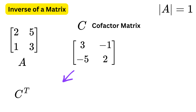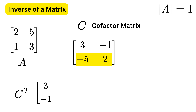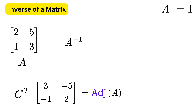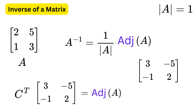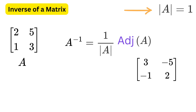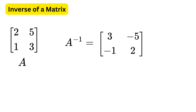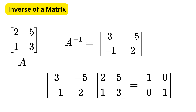After that, simply transpose this matrix — take the first row and make it into a column, then take the second row and turn it into a column. This gives the transpose of the cofactor matrix, which is also called the adjoint matrix. Finally, the inverse of matrix A is 1 divided by the determinant of A times the adjoint of A, or simply the adjoint itself since the determinant is 1. To verify, we multiply this inverse with matrix A, and it gives us the identity matrix — hence verified.